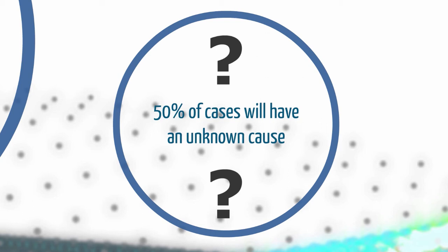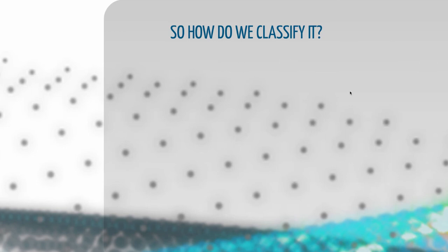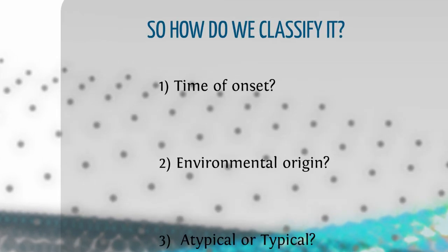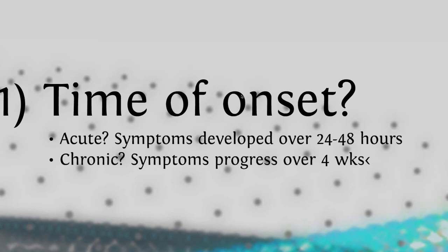Since we won't necessarily know the cause of our pneumonia, we have different ways of classifying it. There are three main ways to classify pneumonia: the time of onset, the environmental origin, and whether it's atypical or typical. For the time of onset, we're concerned about whether it's acute, from 24 to 48 hours, or chronic, where it's four weeks or greater that the symptoms have developed.